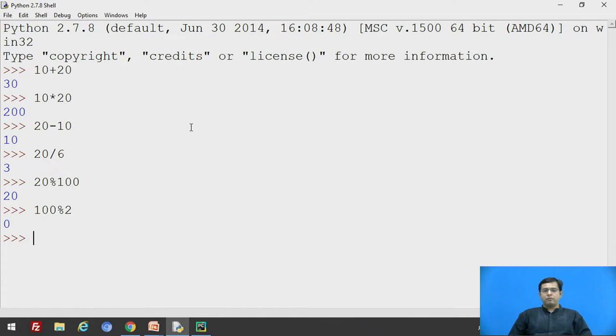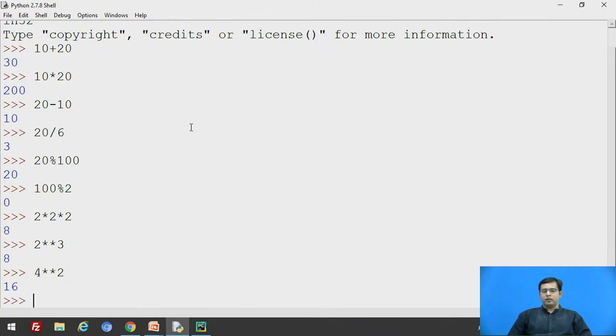Then power of, many times we have to find the power of a number. For example, if you want to find the cube of 2, we have to write 2 into 2 into 2, that is 8. But Python has given you a simpler operator, that is if you use multiplication operator twice in between the two numbers, it will give you the power. 2 raised to 3 will be 8. If you want to find the square of 4, so 4 raised to 2 will be 16.